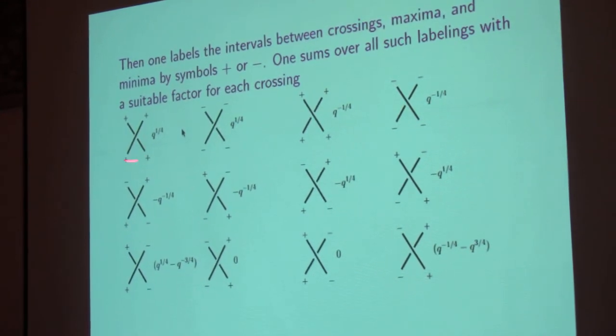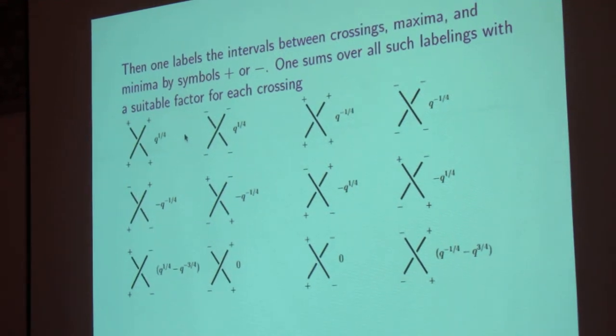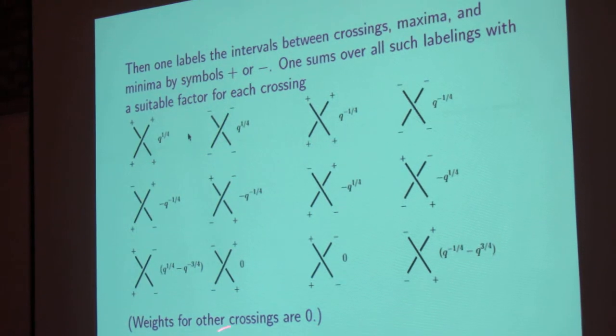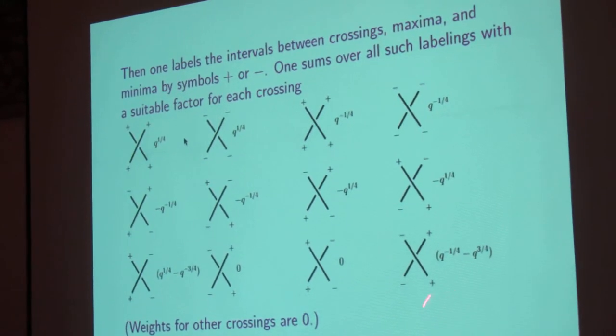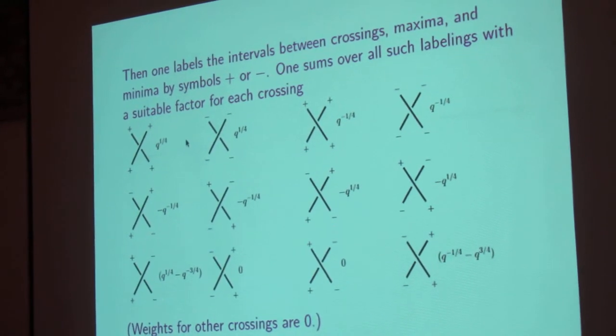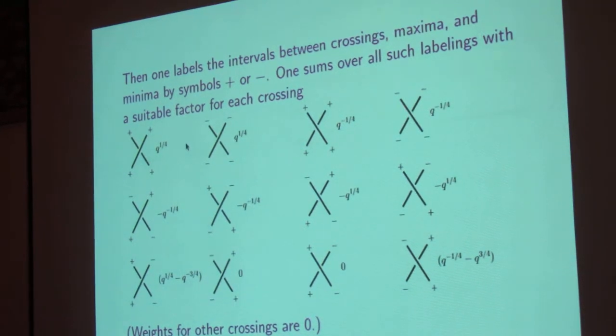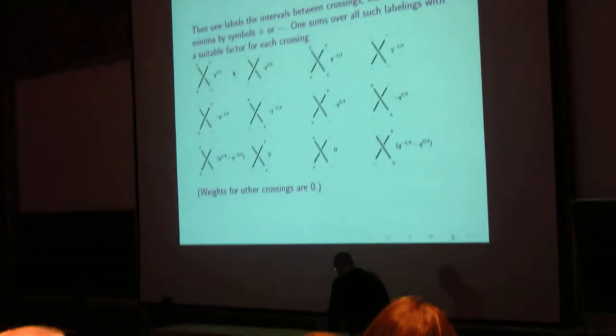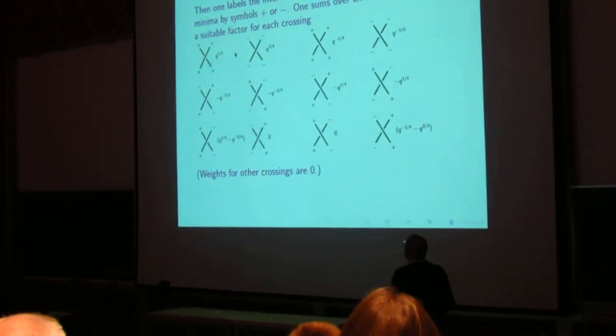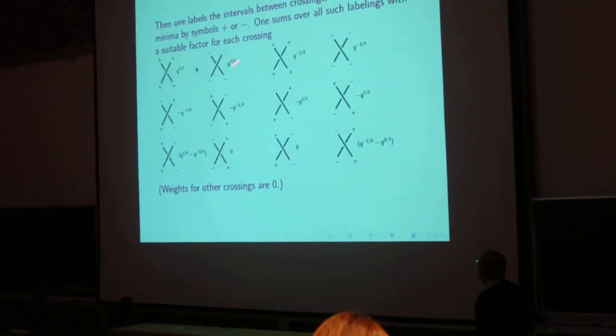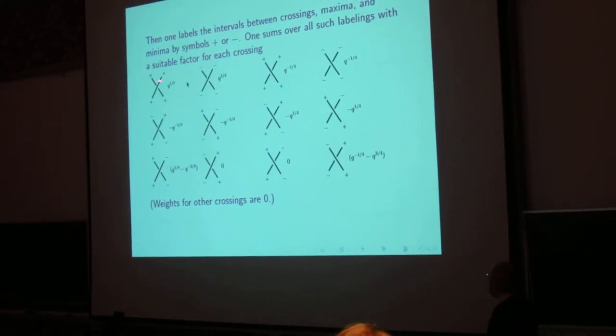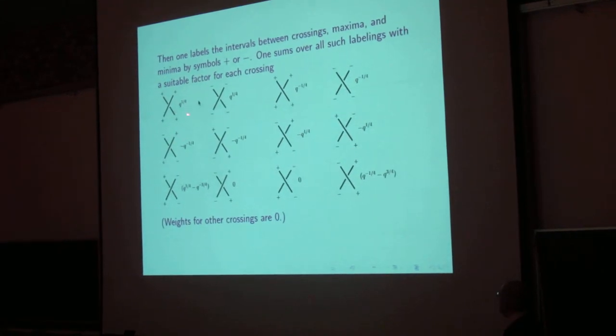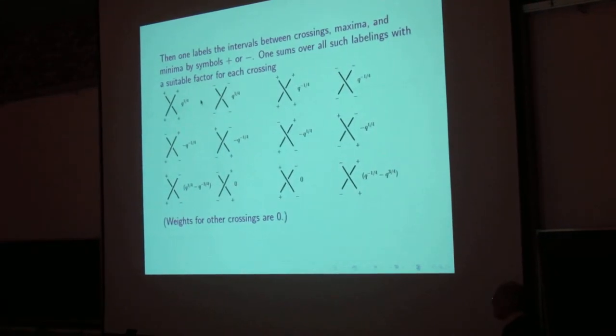So here I've shown some of the possible labeled crossings. Actually not all of them. The other ones are all weighted by zero. For each of the ones I've indicated, I've shown a function of a complex variable q. So for example, this labeling is weighted by q to some power, and this one by zero.